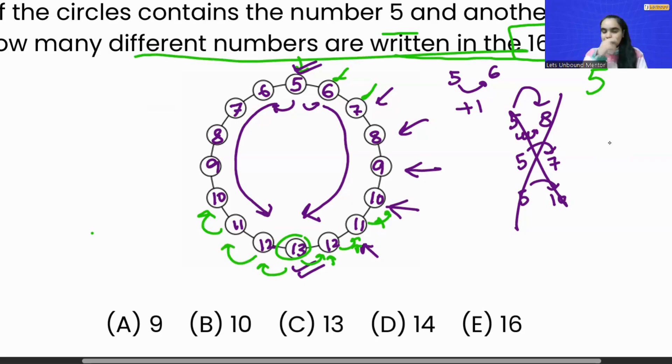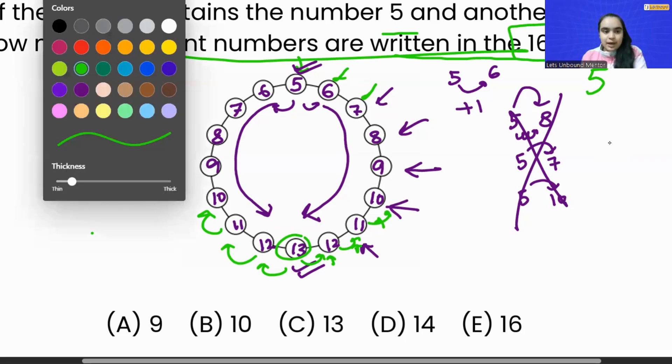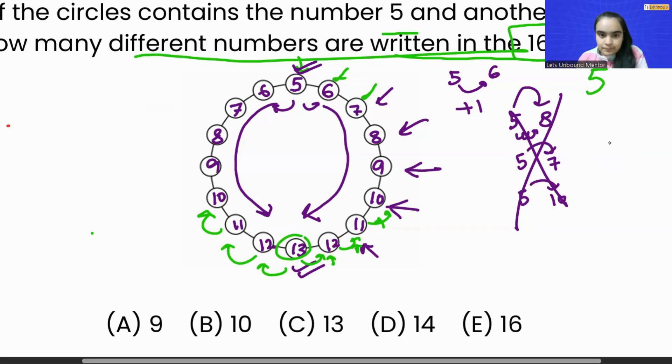So how many different numbers are written on these 16 circles? That's the main question. Let's see how many different numbers are written: 1, 2, 3, 4, 5, 6, 7, 8, 9. So our correct answer is option A, which is 9.